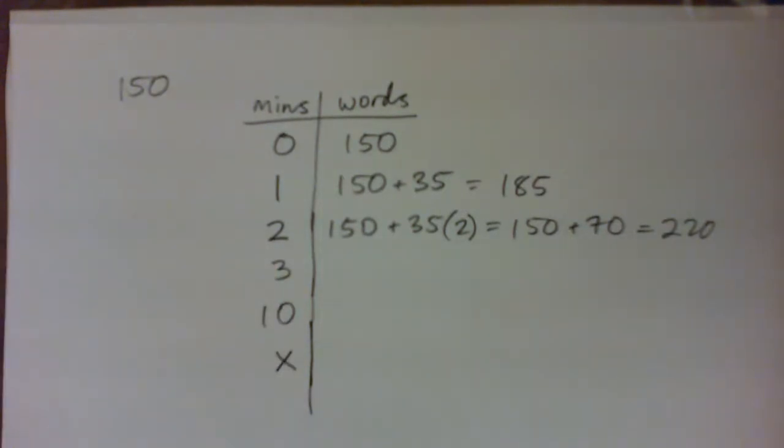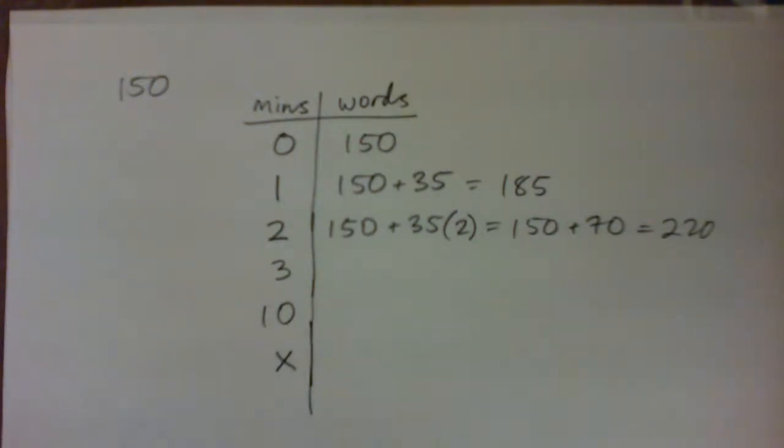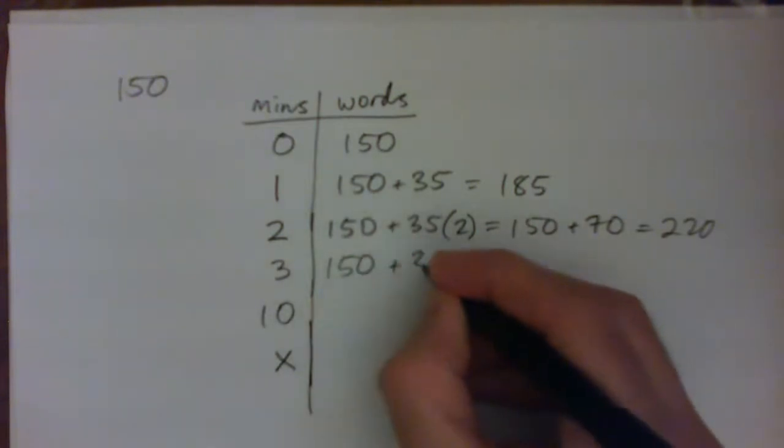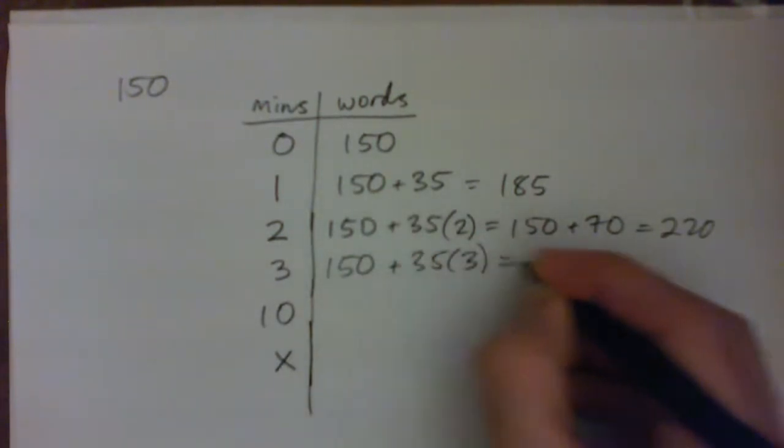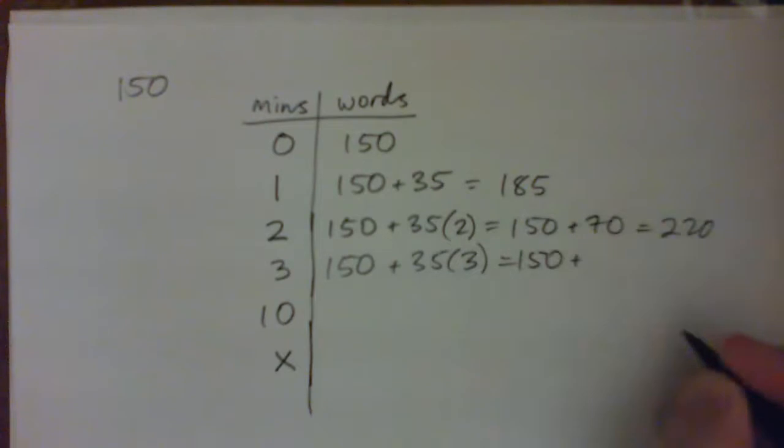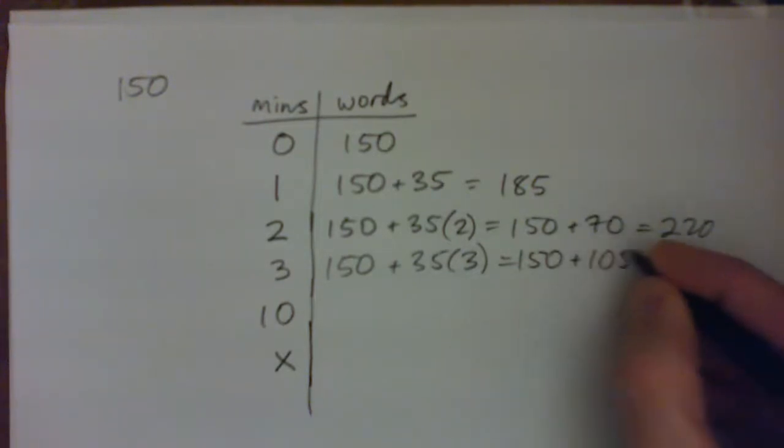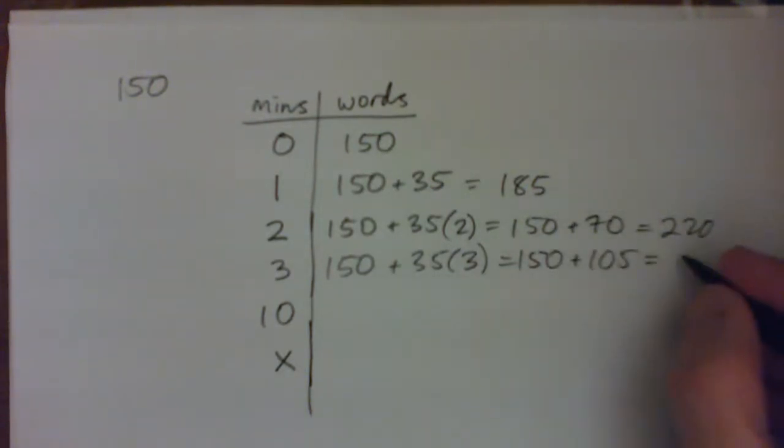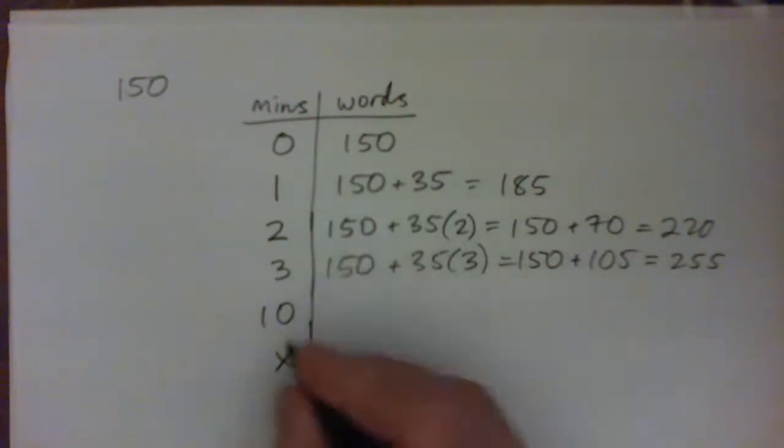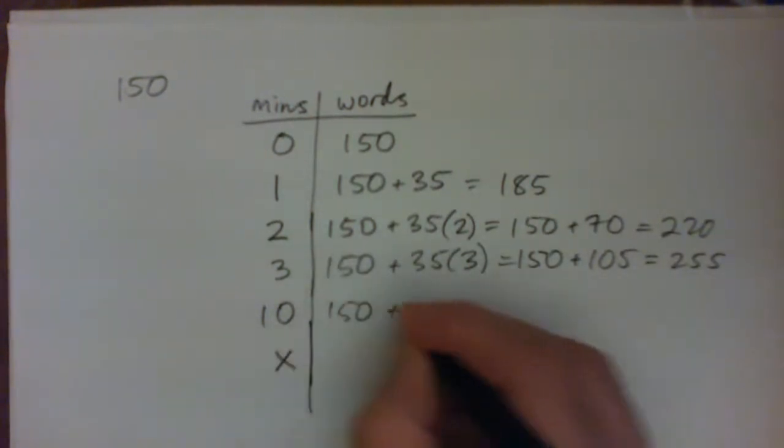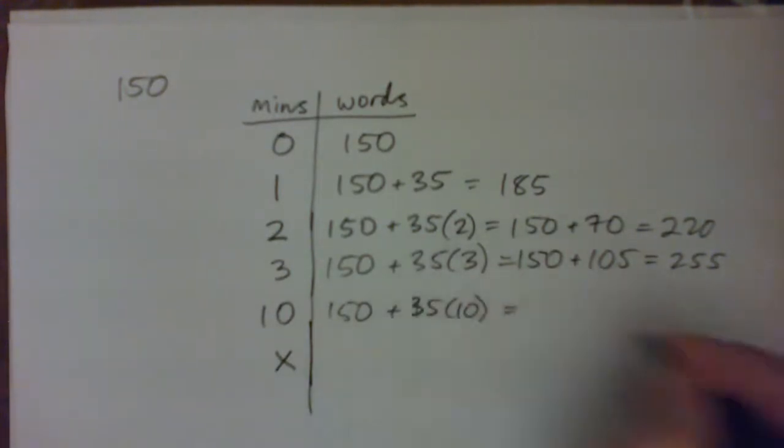Alright, you got it. Perfect, yep. So like I said, after 3 minutes, we got 150 words from yesterday and 35 times 3, so that's 150 plus 105, so that's 255. Then after 10 minutes, 150 from yesterday plus 35 times 10, which is 350, and that adds up to 500, like you say.